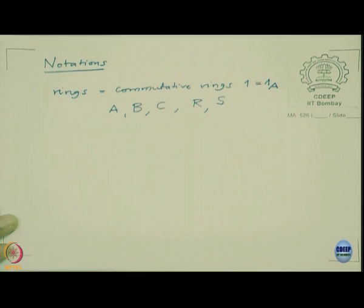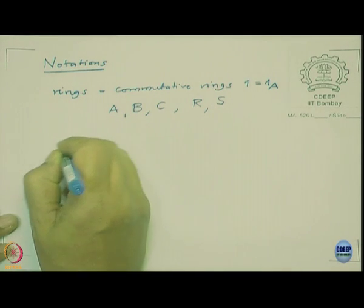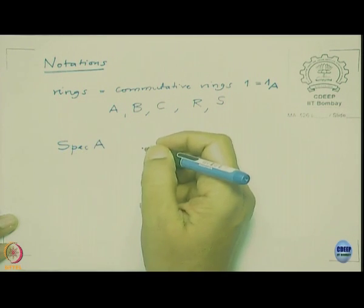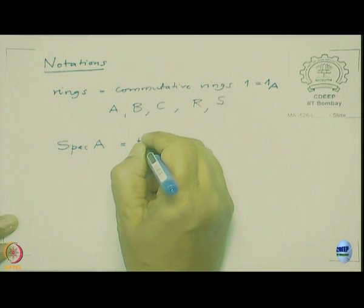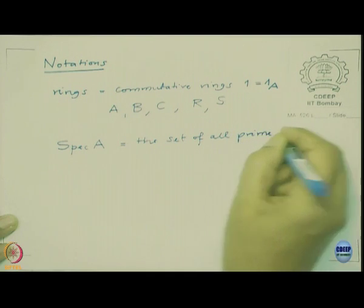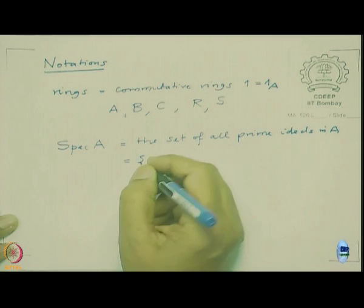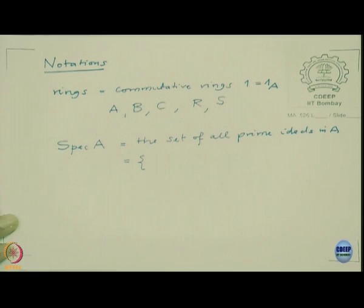In your first course you would have studied prime ideals, and also that there are maximal ideals when the ring is non-zero — that was Krull's theorem. I am going to denote Spec A as the set of all prime ideals in A. I will use German letters to denote ideals, so prime ideals are denoted by the German letter P.